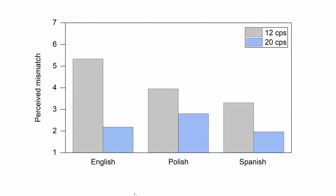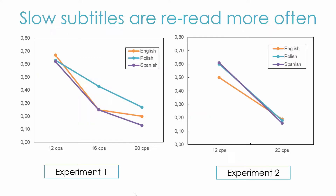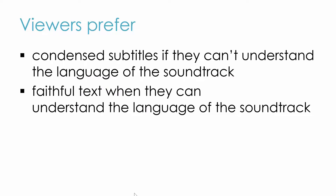In the second experiment, where the clips were in English, we asked participants if they noticed any mismatches between the dialogue and the subtitles. The highest number of mismatches were declared in the slowest subtitles at 12 characters per second by English speakers. Finally, using eye-tracking, we found that slow subtitles were re-read most often compared to the fast ones, which was visible in the higher number of revisits to the subtitle area.